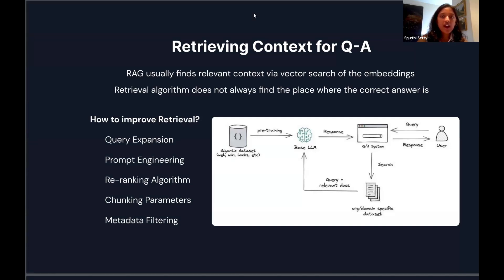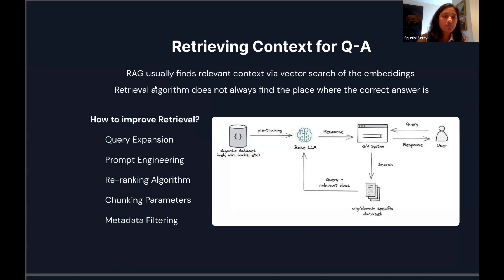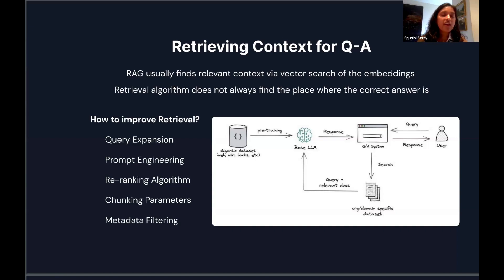RAG uses cosine similarity for retrieval, but this does not necessarily indicate relevance. A human expert would know which section of a document to look in for a given metric, but the model is just looking for the most similar words, and those might not always correspond. Additionally, even the best model after fine-tuning ultimately can't answer the question properly if it's not given the right input.